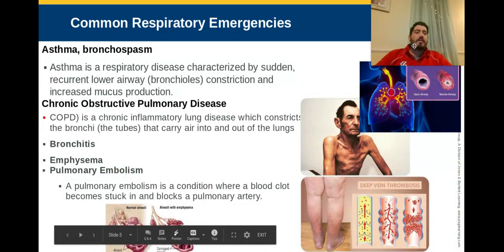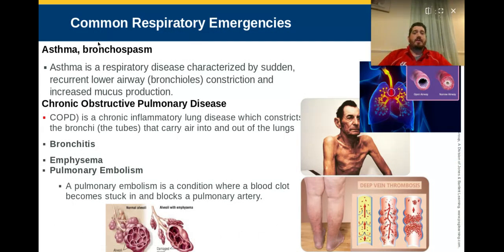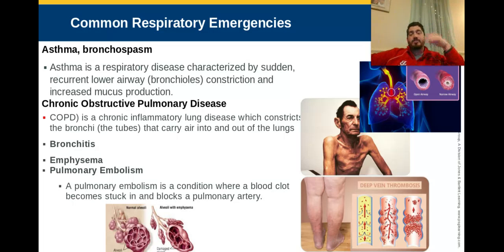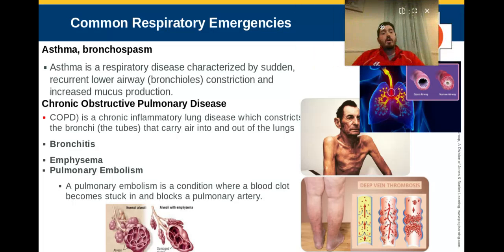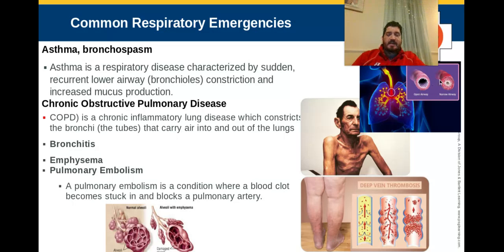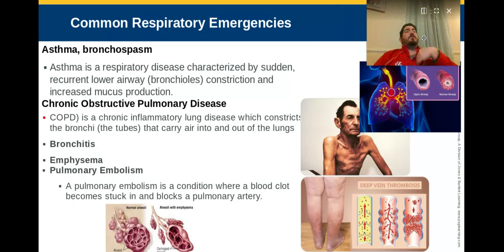What are some common respiratory emergencies? Asthma, also known as bronchospasm — we really don't know what causes it, but there are environmental and genetic factors. Asthma is a respiratory disease involving sudden lower airway constriction of the bronchioles and increased mucus production. When you have an asthma attack, your bronchioles constrict, get really mucousy, and it becomes so hard to move air in and out. You can't get new oxygen in and can't get CO2 out — really dangerous. We see it in all age groups.